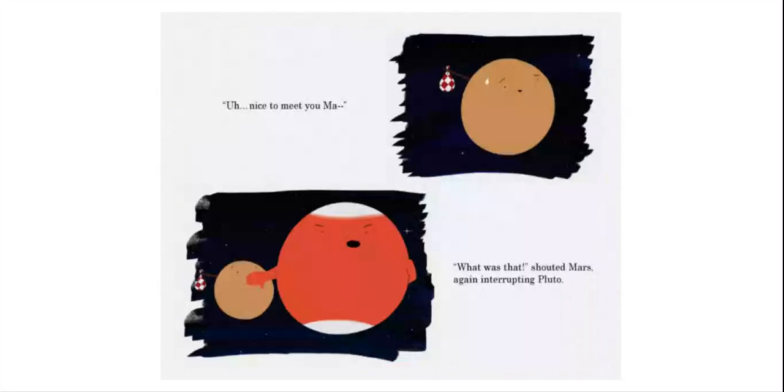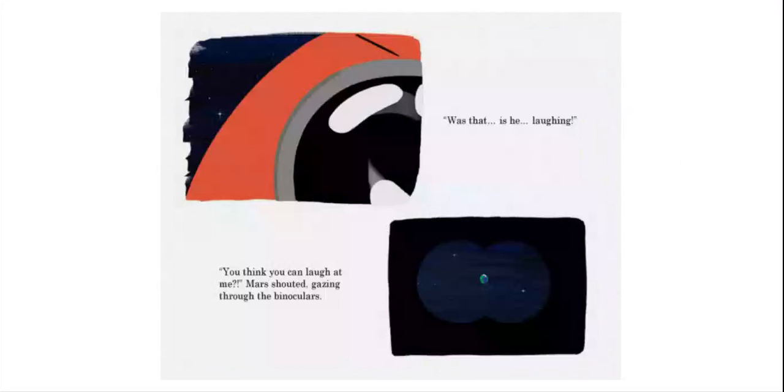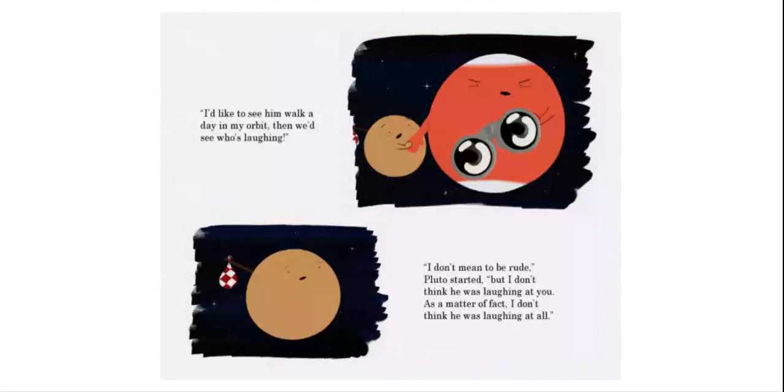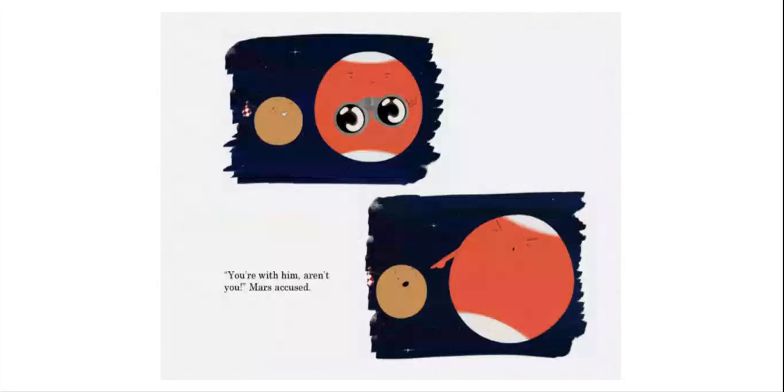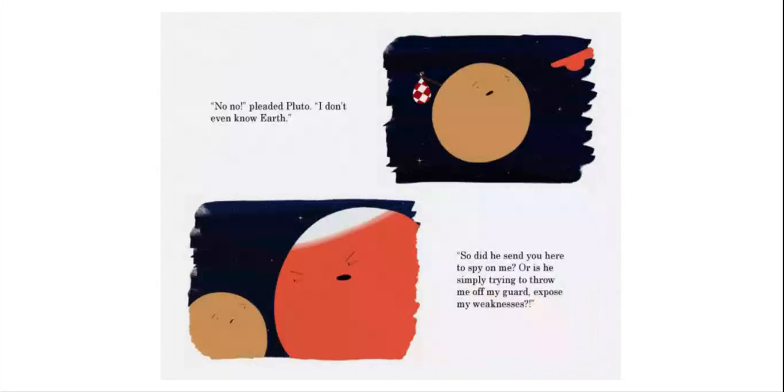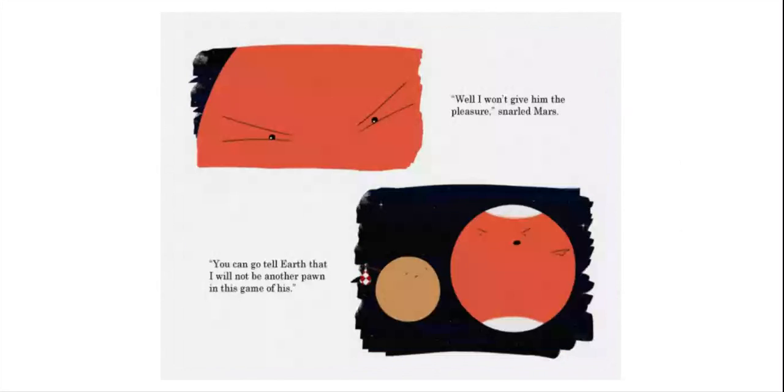Uh, nice to meet you, Ma— What was that? Shouted Mars again, interrupting Pluto. Was that? Is he laughing? You think you can laugh at me? Mars shouted, gazing through the binoculars. I'd like to see him walk a day in my orbit. Then we'd see who was laughing. I don't mean to be rude, Pluto started, but I don't think he was laughing at you. As a matter of fact, I don't think he was laughing at all. You're with him, aren't you? Mars accused. No, no, pleaded Pluto. I don't even know Earth. So did he send you here to spy on me? Or is he simply trying to throw me off my guard, expose my weaknesses? Well, I won't give him the pleasure, snarled Mars. You can go tell Earth that I will not be another pawn in this game of his.